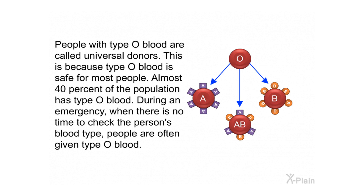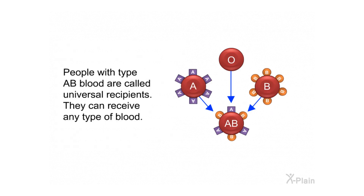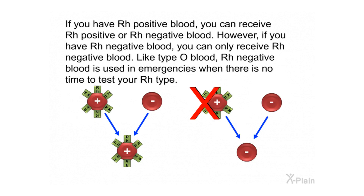During an emergency, when there is no time to check the person's blood type, people are often given type O blood. People with type AB blood are called universal recipients — they can receive any type of blood. If you have Rh positive blood, you can receive Rh positive or Rh negative blood. However, if you have Rh negative blood, you can only receive Rh negative blood. Like type O blood, Rh negative blood is used in emergencies when there is no time to test your Rh type.